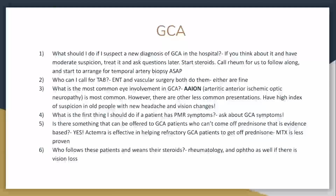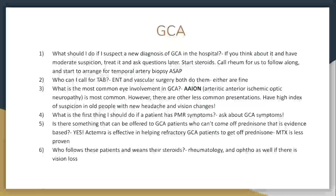Is there something that can be offered to GCA patients if they can't come off prednisone? We treat the patient, they get the biopsy, hopefully it comes back positive, we treat them with steroids and you have to wean these steroids over like a year or more. You do it very slowly — oftentimes you get down to a certain point and just find you can't get them off. The answer is yes — Actemra has been studied and shown to help people get to a lower dose of steroid and eventually get off steroids.